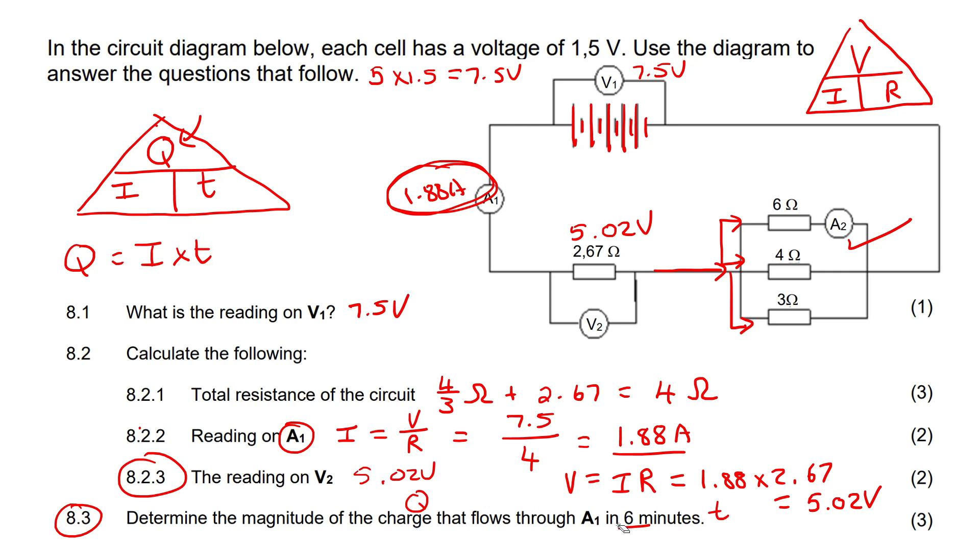We know going through A1, the current is 1.88. The time is six minutes, but we definitely want that to be in seconds, so we multiply that by 60. And so if you work this out, you end up with 676.8, and charge is measured in Coulombs.